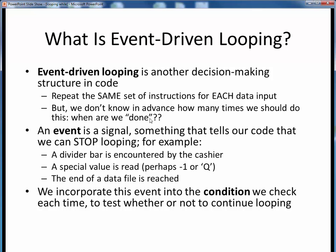Something needs to tell us when we're done, and that something is called an event. An event is some sort of signal, some thing that happens, which tells our code that it can stop looping. For example, in the grocery cashier example discussed previously, encountering the divider bar on the conveyor belt is the event which tells us that all our groceries have been scanned.